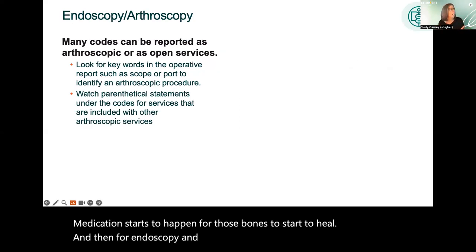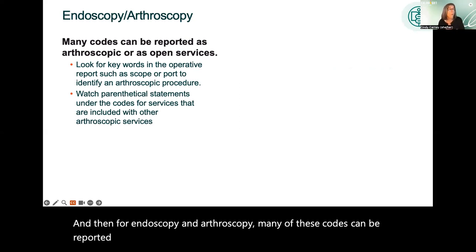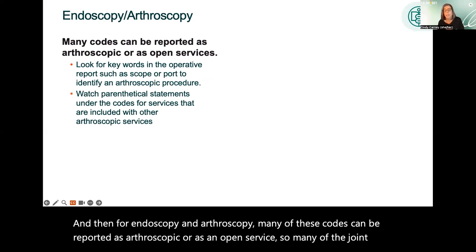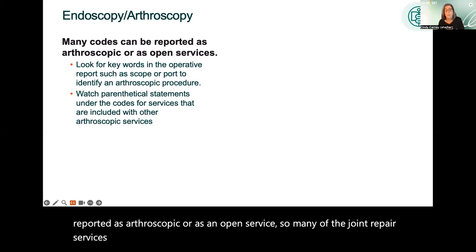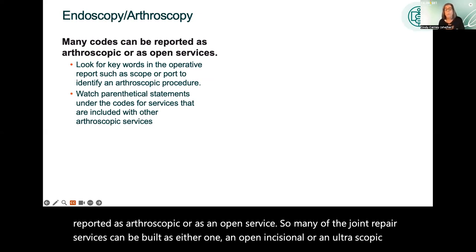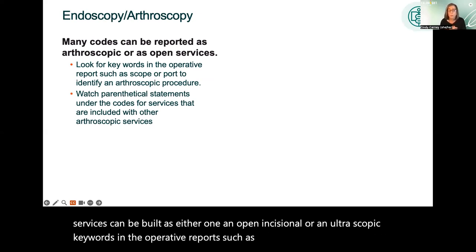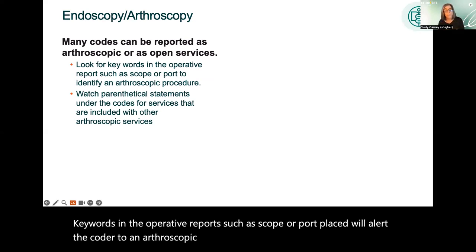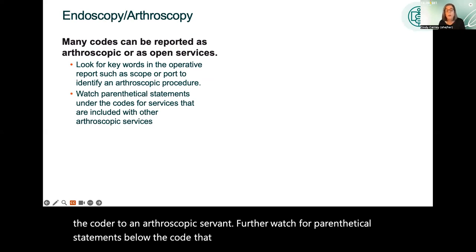For endoscopy and arthroscopy, many of these codes can be reported as arthroscopic or as an open service. Many joint repair services can be billed as either open incisional or arthroscopic. Keywords in the operative report such as 'scope' or 'port placed' will alert the coder to an arthroscopic service. Also watch for parenthetical statements below codes that indicate when services are included in others.